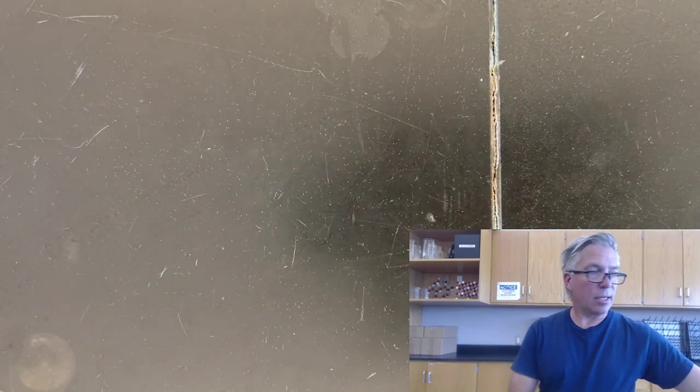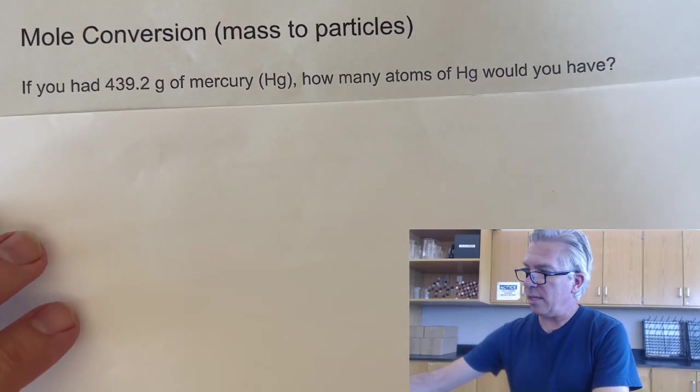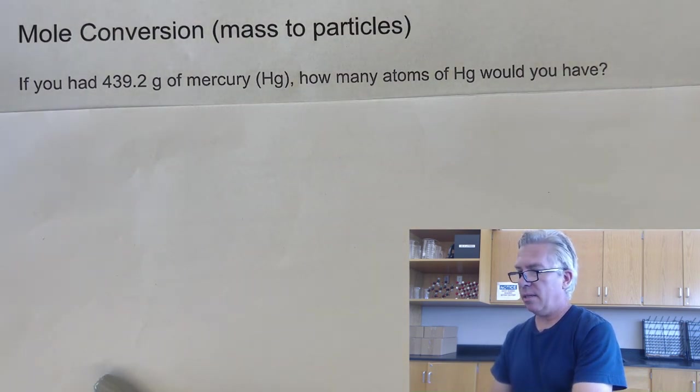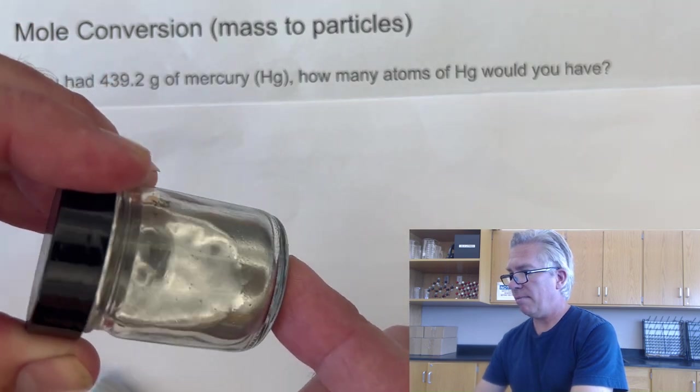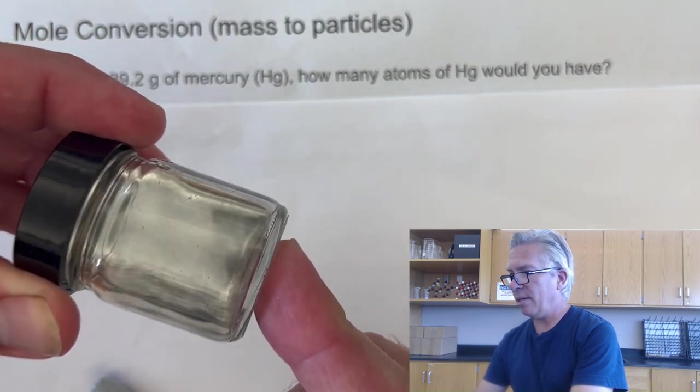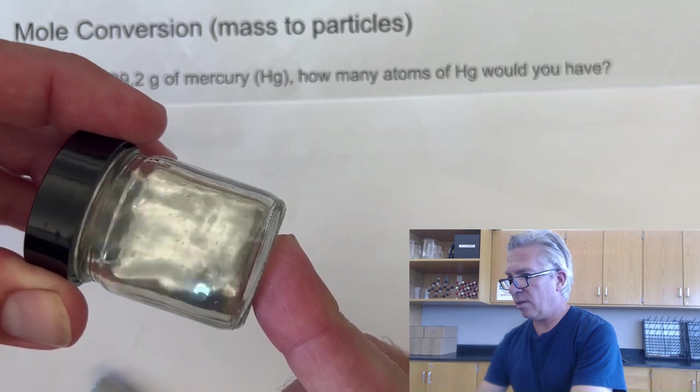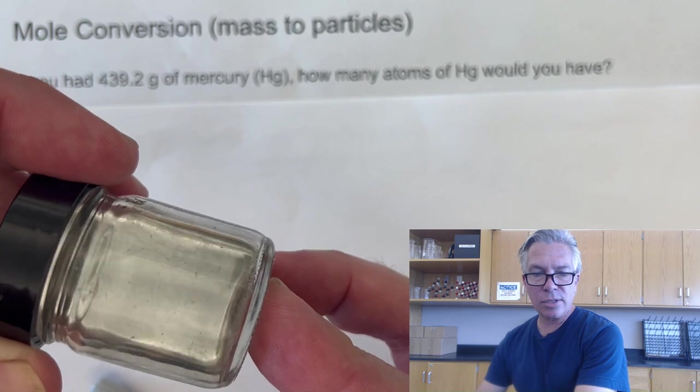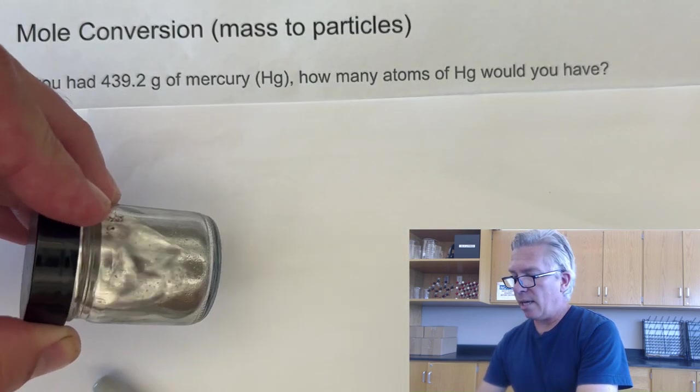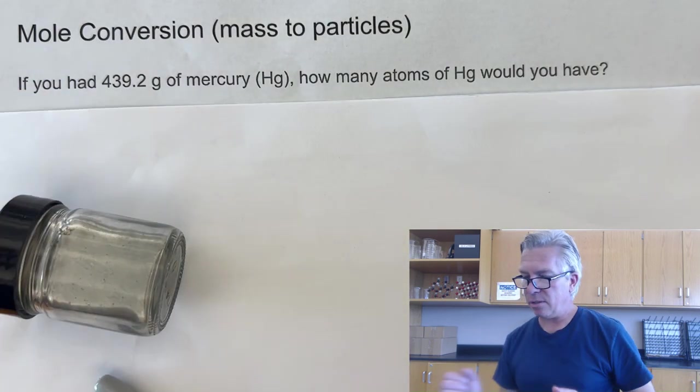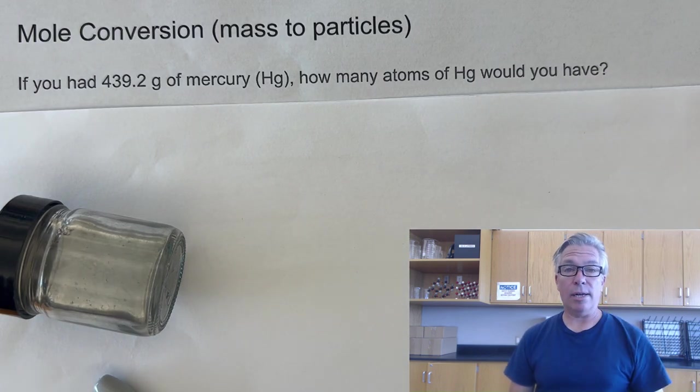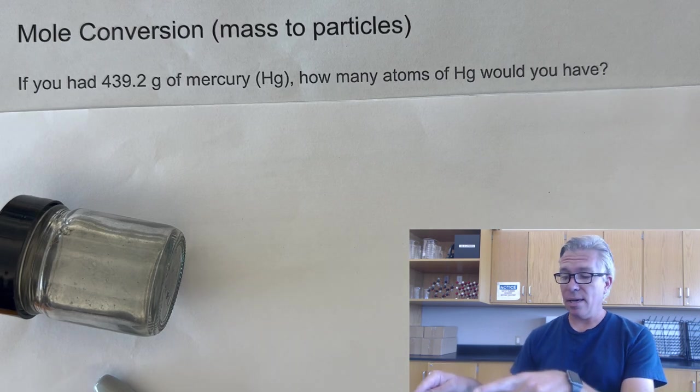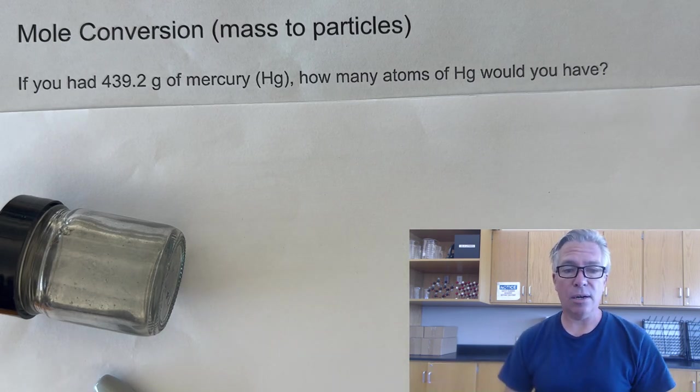I actually have another sample I'd like to show you. I actually have a sample of mercury this time. And mercury, if you've never seen it, is a silvery liquid metal. It's actually quite heavy. And so you can see it sloshing around in there. I'm going to use both hands so I don't drop it. And this sample contains just over 30 milliliters of mercury. And I put it on the balance, and it happens to weigh 439.2 grams. So it's your turn. Take a moment and see if you can calculate or predict how many atoms of mercury are in that sample. Feel free to pause the video.